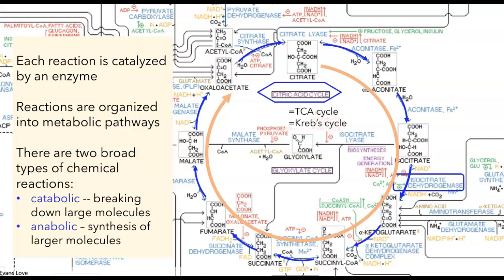There are also anabolic pathways, which lead to the synthesis of larger molecules from smaller precursor molecules. For example, there's a compound called glyoxylate — only two carbons long — that can be combined with something called acetyl-coenzyme A in order to form malate, a four-carbon compound. That would be an anabolic pathway.